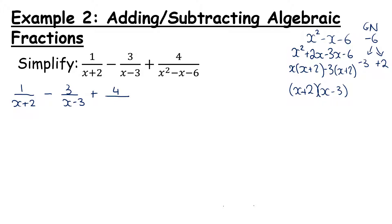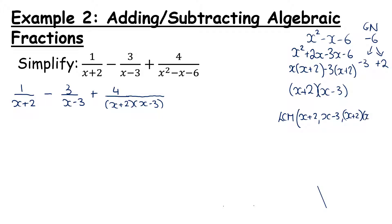We rewrite the third fraction using the factors just found: (x plus 2)(x minus 3). Now we're going to find the lowest common multiple of x plus 2, x minus 3, and (x plus 2)(x minus 3). Using these two factors creates a common denominator because they contain both x plus 2 and x minus 3. So our lowest common multiple — and our common denominator — is (x plus 2)(x minus 3).